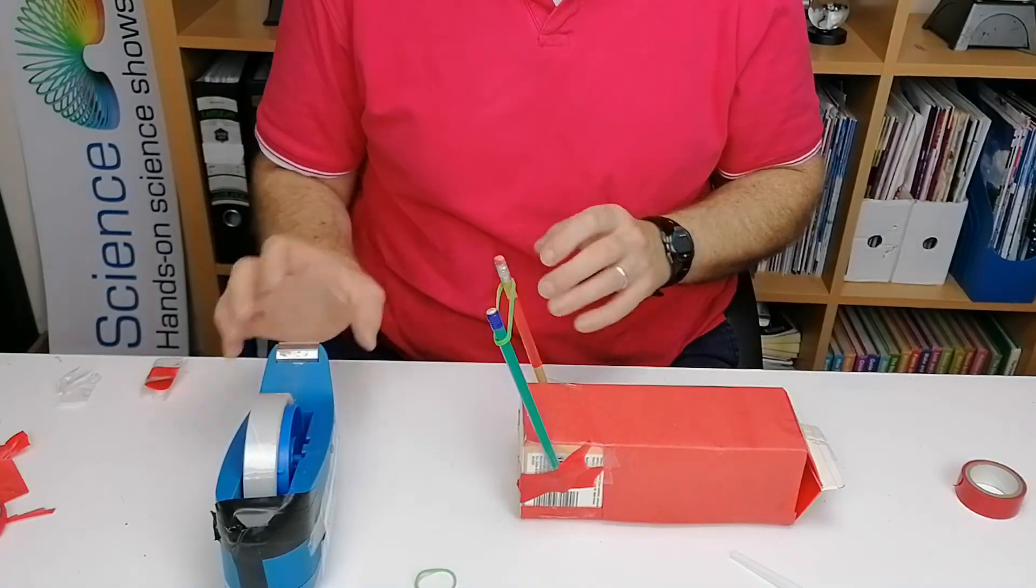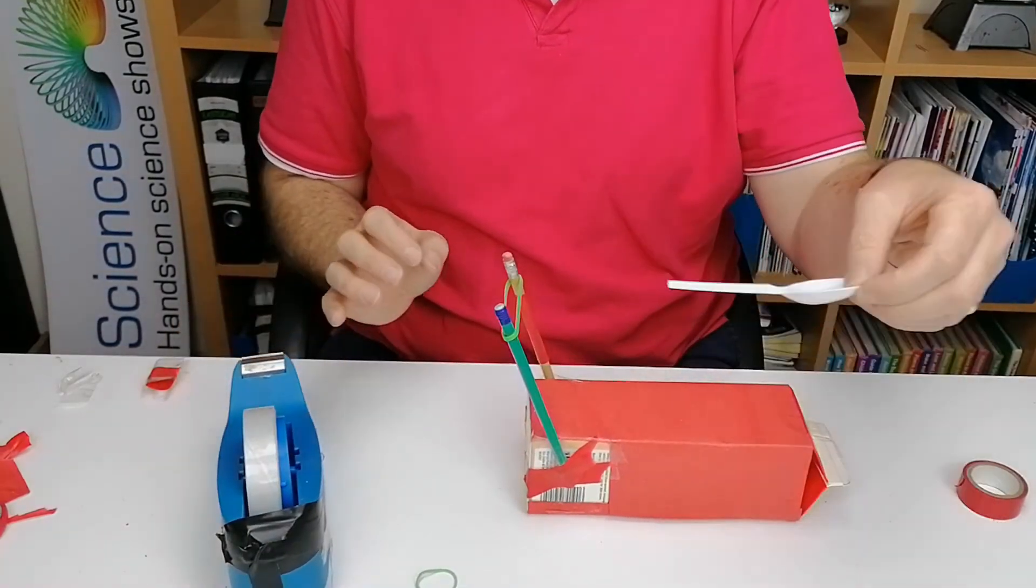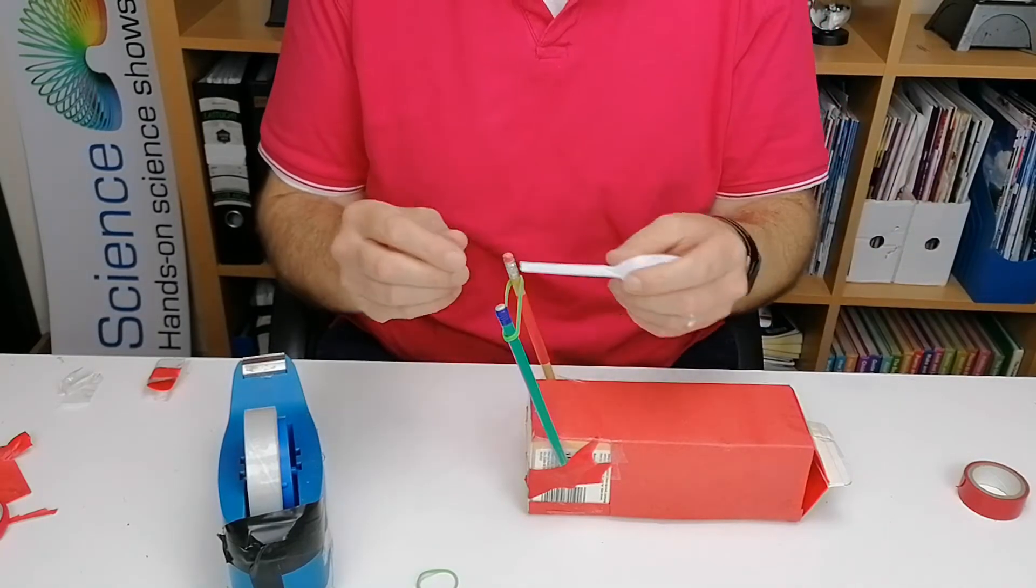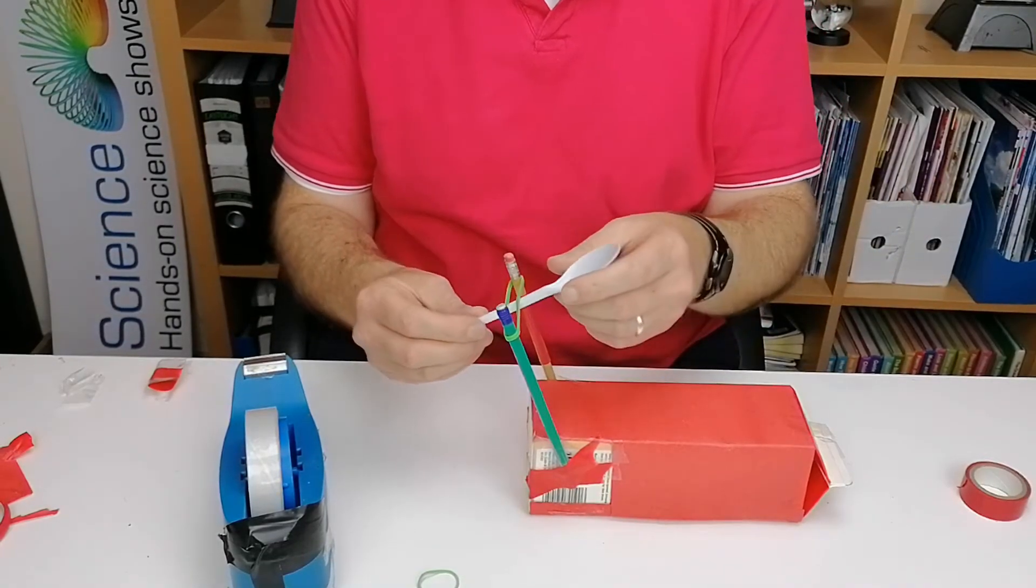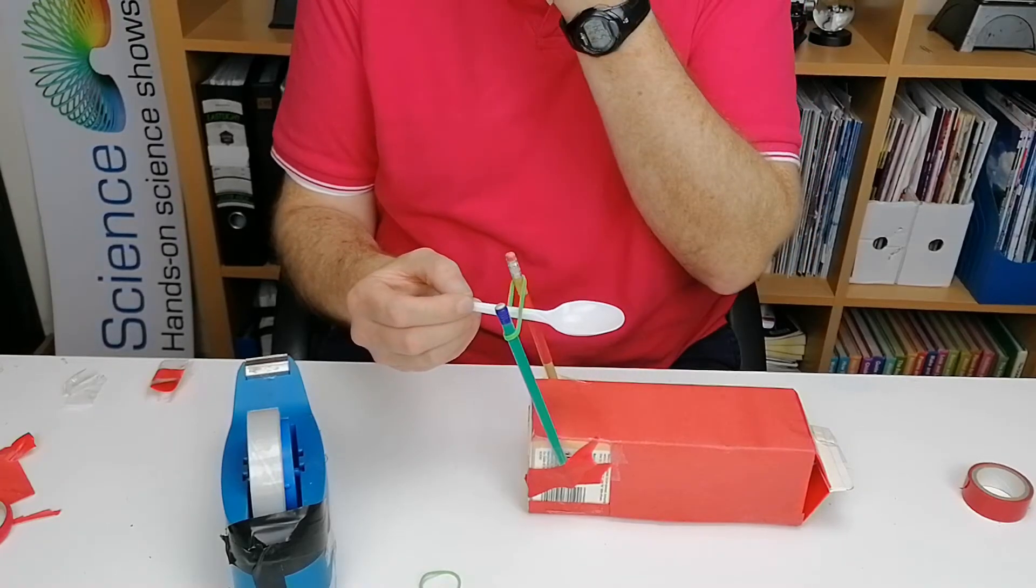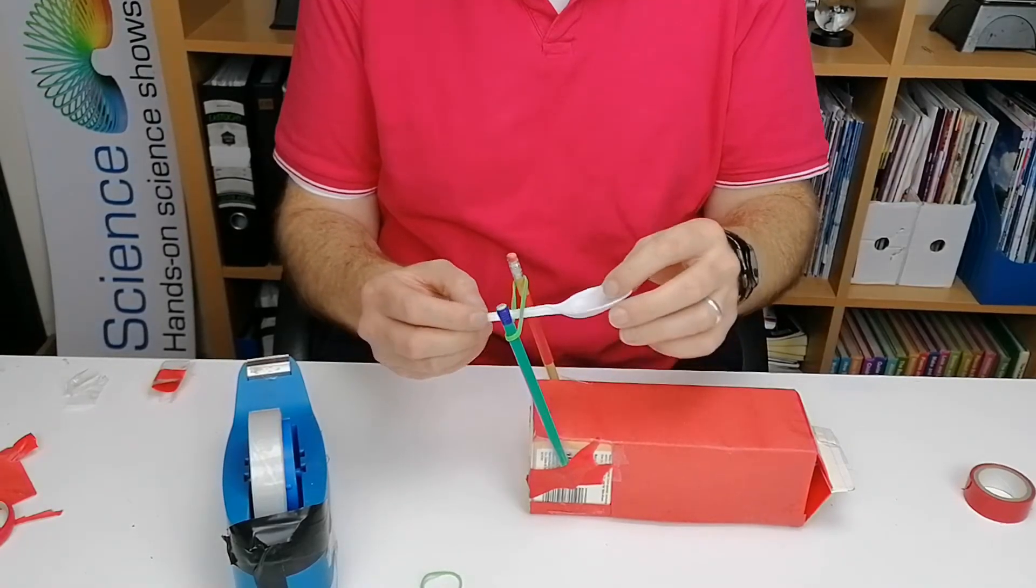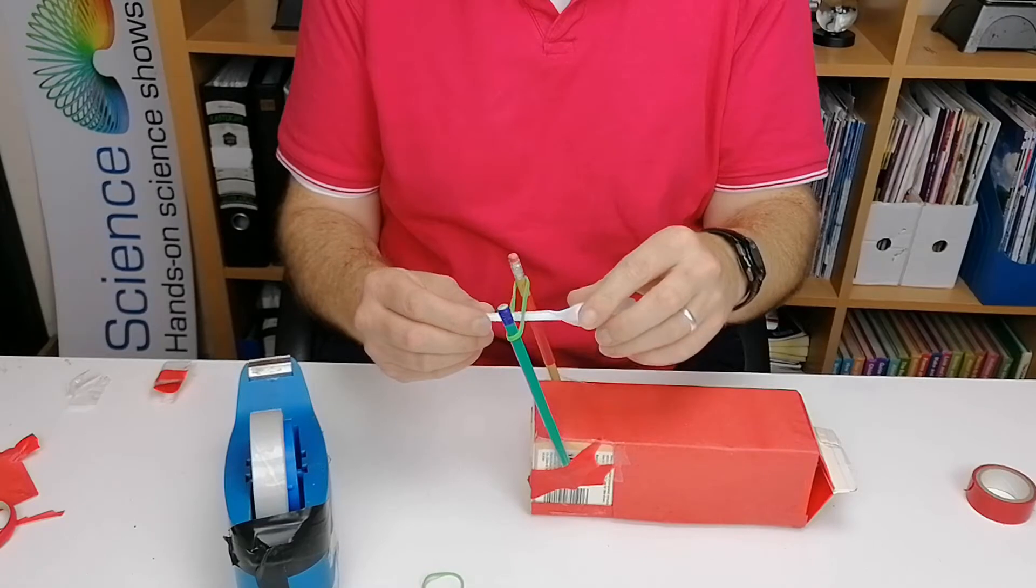And then you're going to get your spoon. Now the confusing way is, you want to launch the catapult this way, so you want to put the marshmallow here and it's going to launch this way. But if you turn it the way you want it to launch—and I'll do that now just to show you—if you turn it the way you want it to launch and let go, it will fire it backwards.